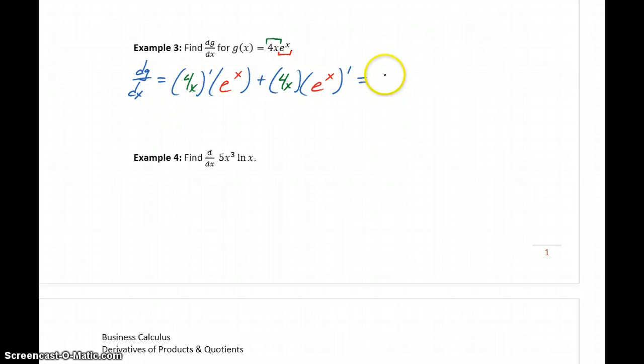So differentiating this will give us 4e^x plus 4x times the derivative of e^x, which is going to be just e^x.